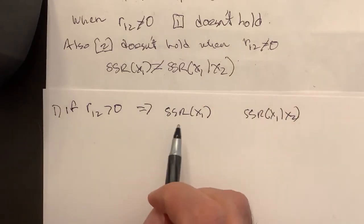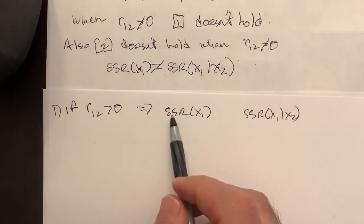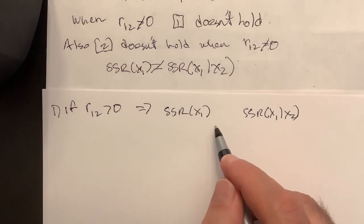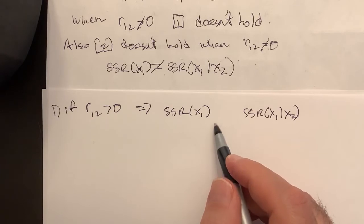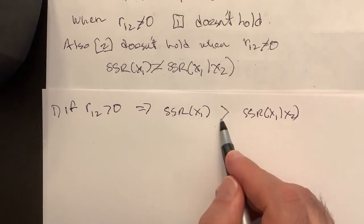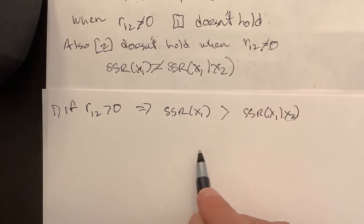So, if they're positively correlated, and x2 is already in the model, then I expect SSR x1 to be greater than this, right? Because this will already capture some of the explanatory power of SSR x1.